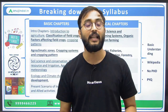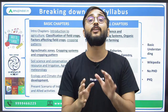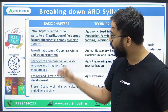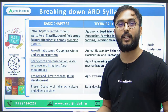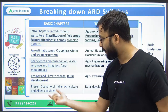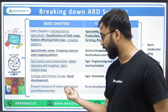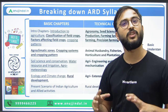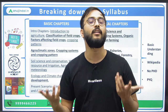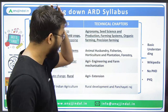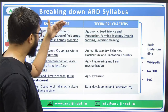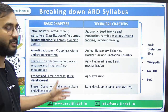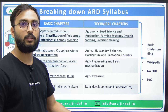All these basic chapters you have been visiting since childhood — you know these chapters. You don't need to worry or be scared about them. This is where you have to actually score. The last chapter in basic blocks is the present scenario of Indian agriculture and allied activities, which can be covered through current affairs.